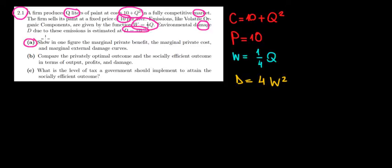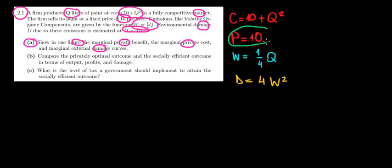In part (a), we want to show on a graph the marginal private benefit, the marginal private cost, and the marginal external damages. The marginal private benefit is how much money we make from selling our good — that is simply the price of $10 per unit. So the marginal private benefit equals 10.